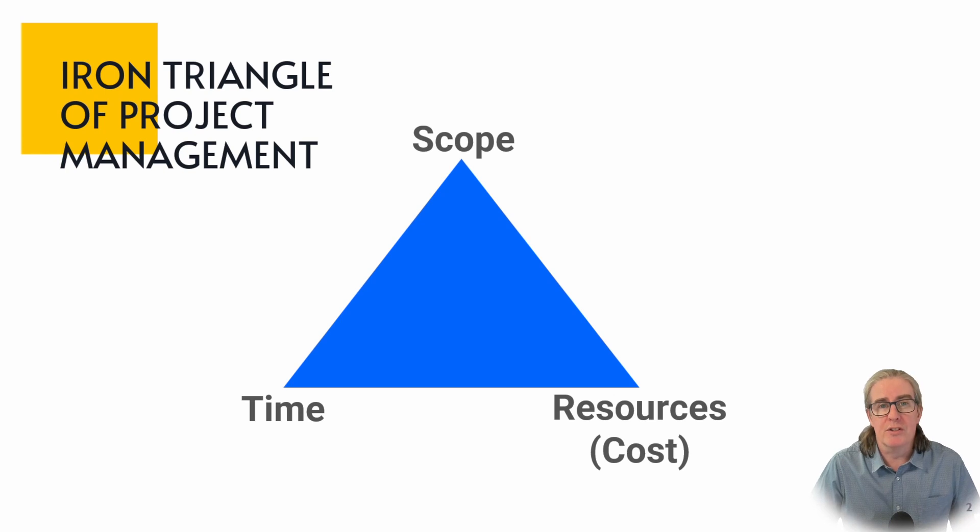And then finally you've got cost and in this example we're going to use resources because typically, especially for knowledge work projects, the major cost that's involved is the resources that you're actually using. You also have quality and depending on how you're using those scope, time and resources this can fundamentally affect quality. But in this video we're really going to be focusing on the three major data points on the outside.